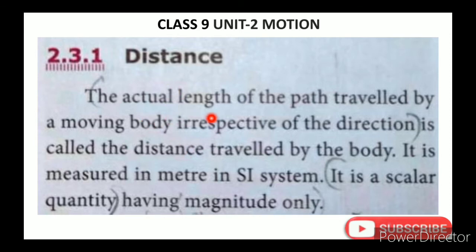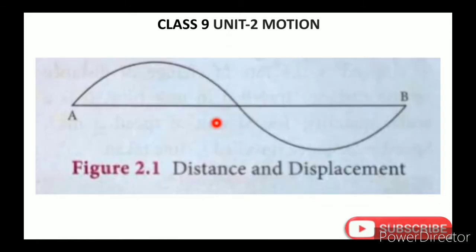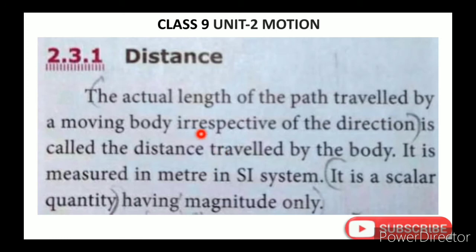Distance — definition: The actual length of the path traveled by a moving body, irrespective of the direction, is called the distance traveled by the body. That is our distance. It is measured in meters in the SI system. It is a scalar quantity having magnitude only.